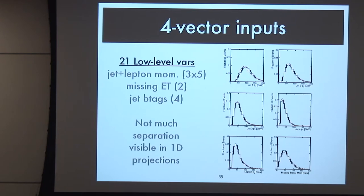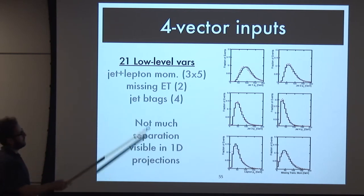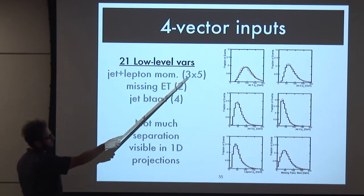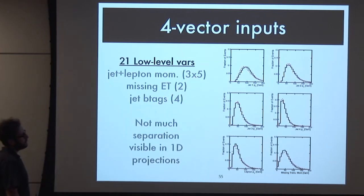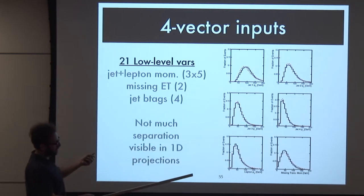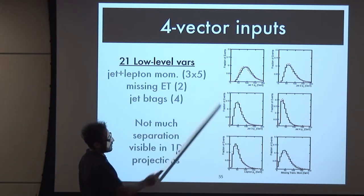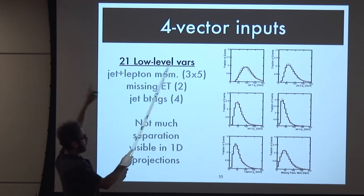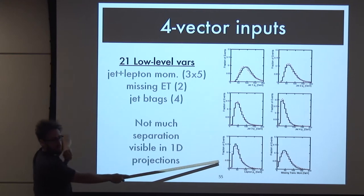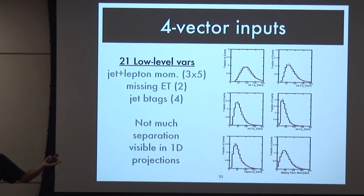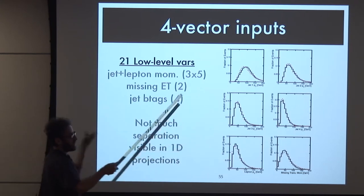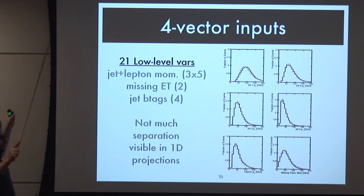The low-level information was jet and lepton momenta - three pieces of information for five different objects - plus missing ET, and B-tags. Looking at distributions of lepton PT and jet PT 1-4, you can't see much discrimination. This is a 21-dimensional space and these are just one-dimensional projections. Clearly there can be discrimination in the higher-dimensional space that you don't see in these projections - and that's the task of the network.